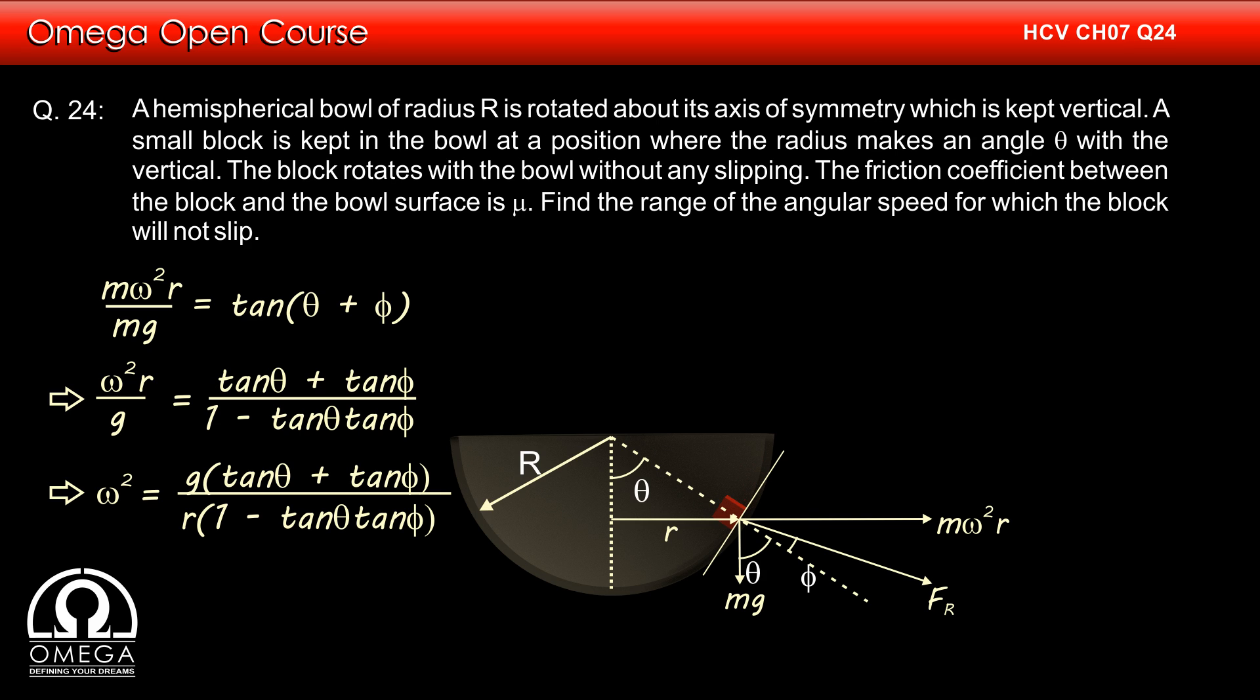Putting sin theta by cos theta in place of tan theta, mu in place of tan phi, and capital R sin theta in place of r and simplifying, we get omega equals root under g into (sin theta plus mu cos theta) divided by R sin theta into (cos theta minus mu sin theta). This is the maximum value of omega. Increasing omega beyond this value will cause the block to slide upwards.